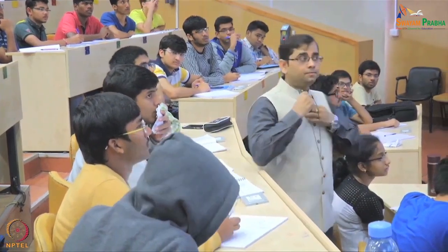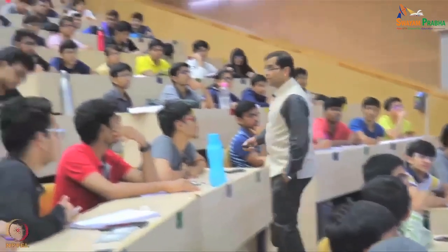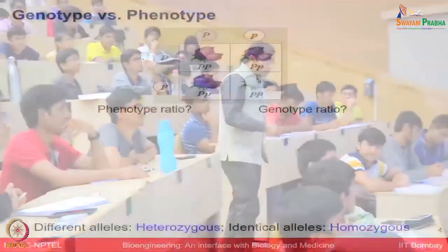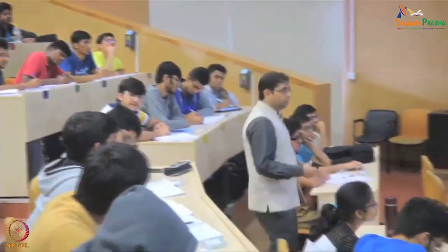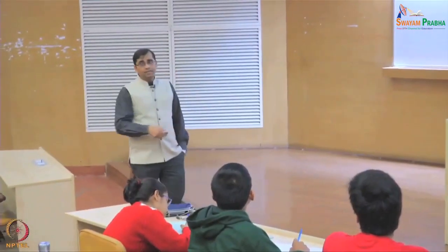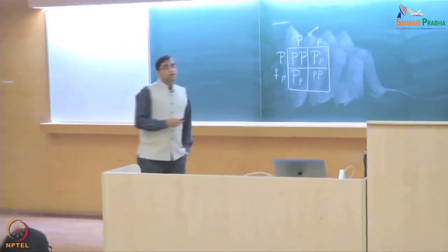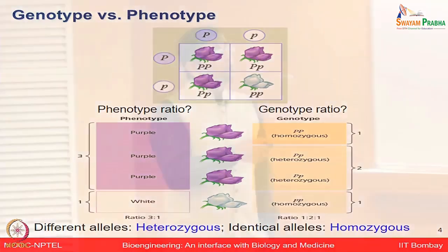What will be the phenotype ratio? It is 3 to 1. Why 3? Because capital P is dominant. So the genotypic ratio is 1 to 2 to 1, and the phenotypic ratio — all those which are dominant, which is purple in color — is 3 to 1 compared to white, which is the recessive color. So we got 3 purple and 1 white: phenotypic ratio 3 to 1, genotypic ratio 1 to 2 to 1.